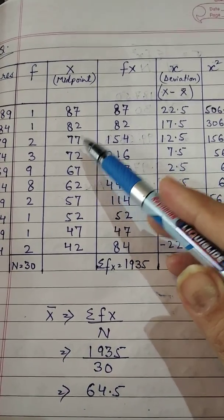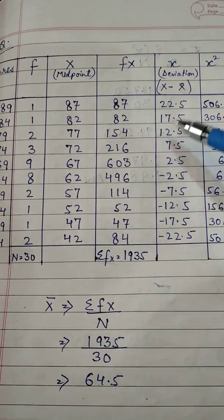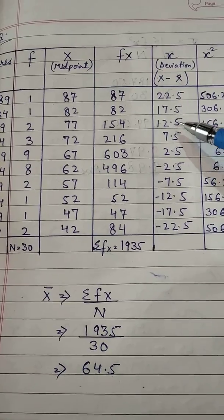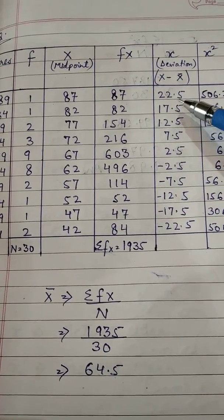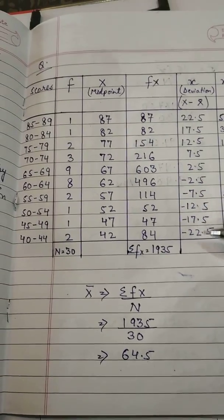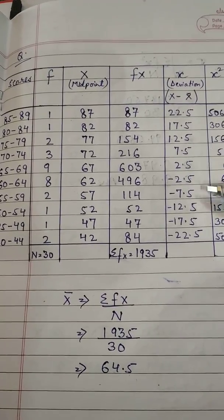82 minus 64.5, yeh aagya. Is tariqe se dekhiye. Yeh aata chala jayega. Kuch values plus mein hoongi, kuch values minus mein hoongi. In the same way you will calculate small x.